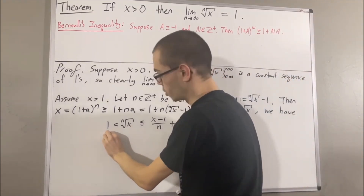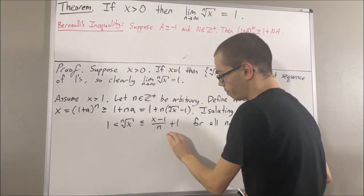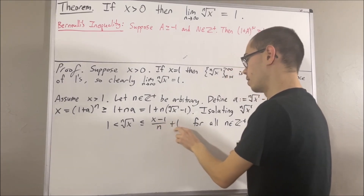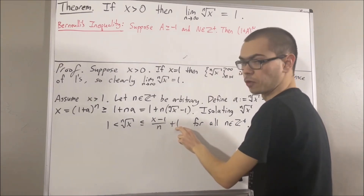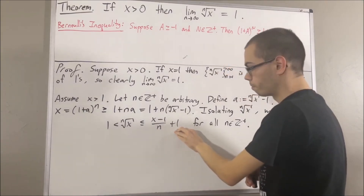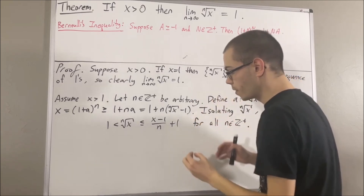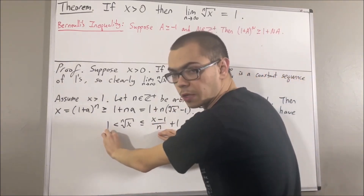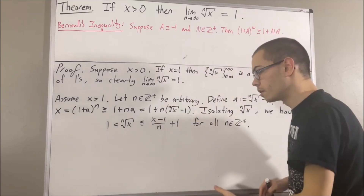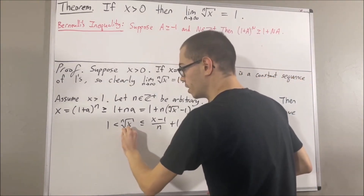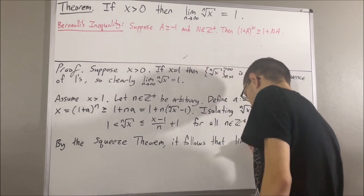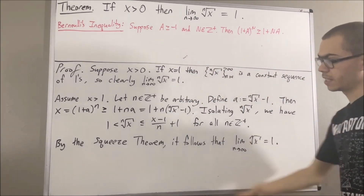Clearly, a constant sequence of 1s converges to 1. But also, this sequence converges to 1, because we know that the sequence (x minus 1) over n converges to 0, and adding 1 to that — by the addition property of limits — this sequence must converge to 1. And now, by the squeeze theorem, because these two sequences converge to 1 and this inequality is true for all positive integers, the sequence squeezed between them must also converge to 1. This completes the case that x is greater than 1.